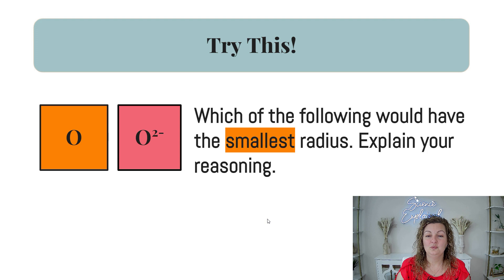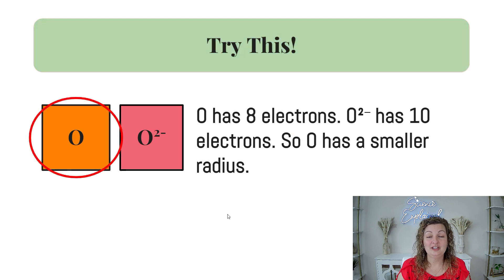Okay, try this one. Which one has the smallest radius? Pause. All right, let's look at the answer. If we're looking on the periodic table, oxygen is number eight, so it has eight electrons. And then if we're looking at O2-, that means it has gained two electrons. So it has 10. So the smaller one is going to be just neutral oxygen and O2- is going to be larger.